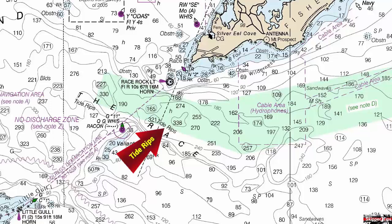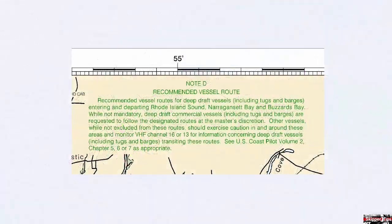We scan the chart and see that the cartographers have written in C, note D. Note D tells us that the green tinted area on our chart shows the recommended vessel route for deep draft vessels. Other vessels, while not excluded, should exercise caution in and around the area and monitor VHF channel 16 and 13.